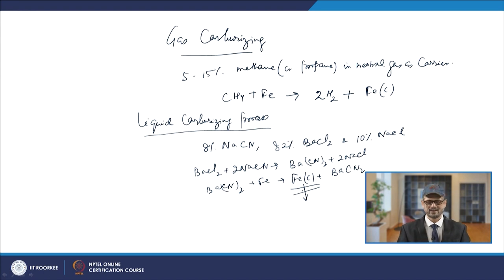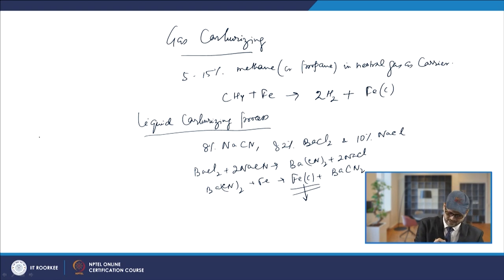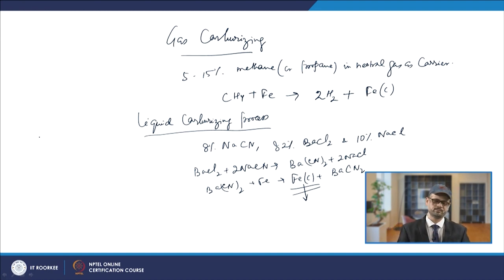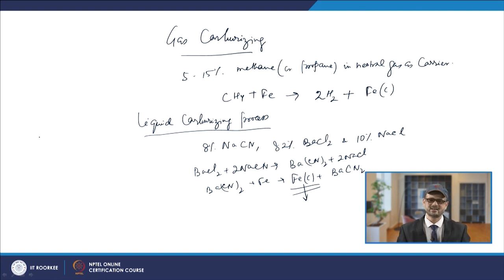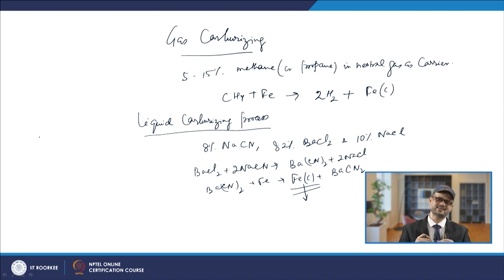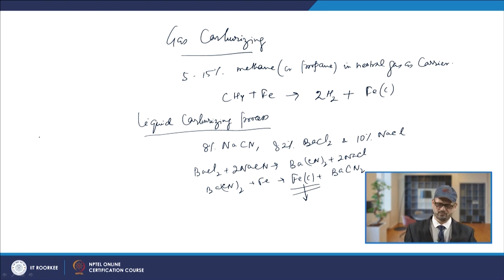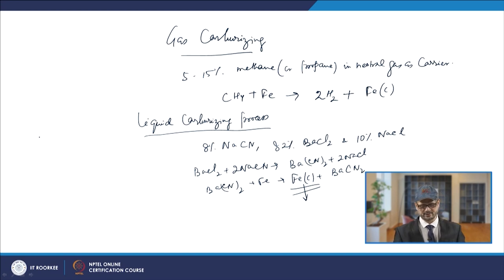After carburizing, post-carburizing heat treatment is required. We perform heat treatment in two stages: first, heating above the A3 line and then cooling; then heating again to just above A3 and cooling to room temperature. In the second stage, we heat to just above A1 and then cool. This is done to achieve a fine microstructure in the material.